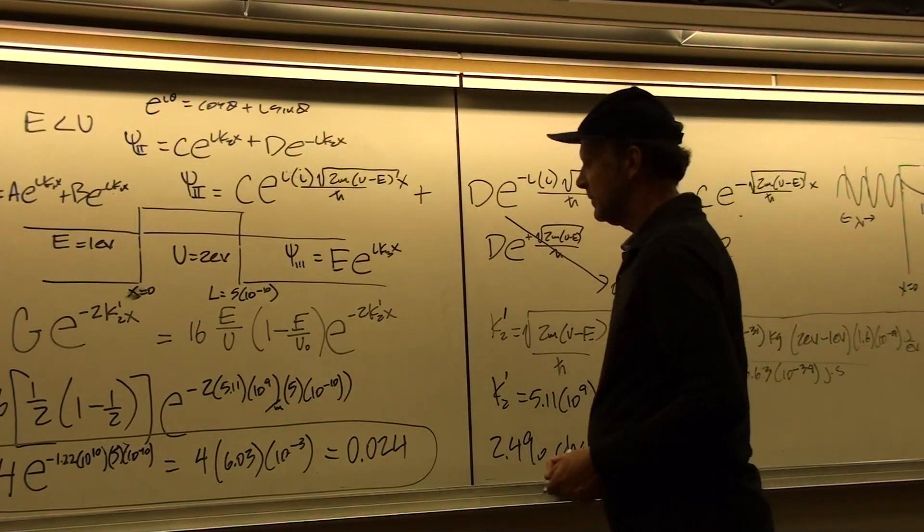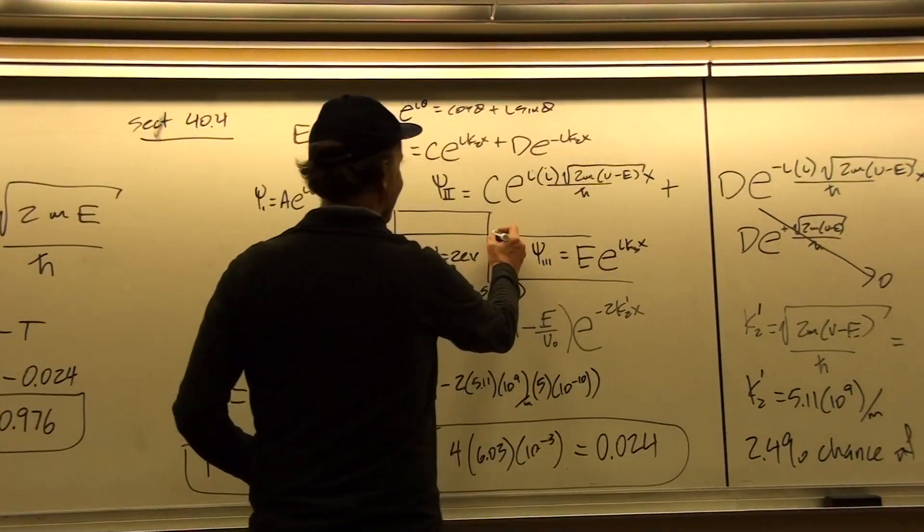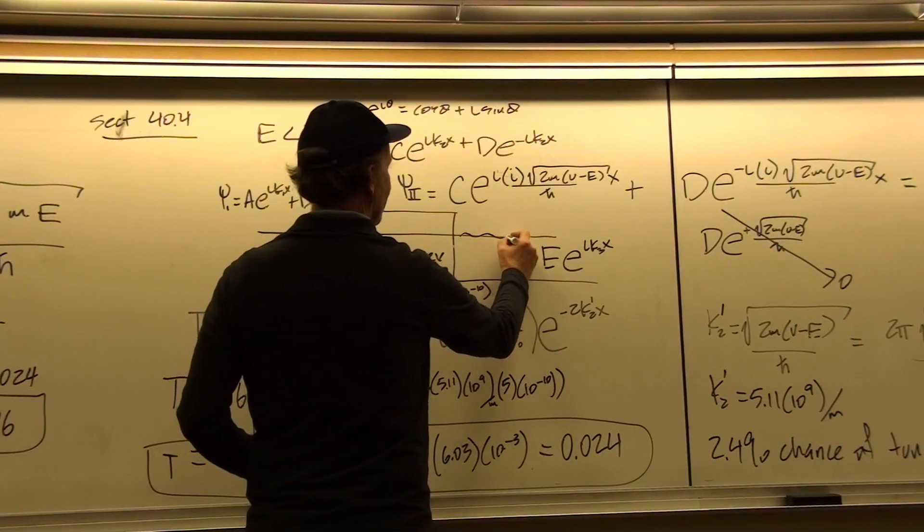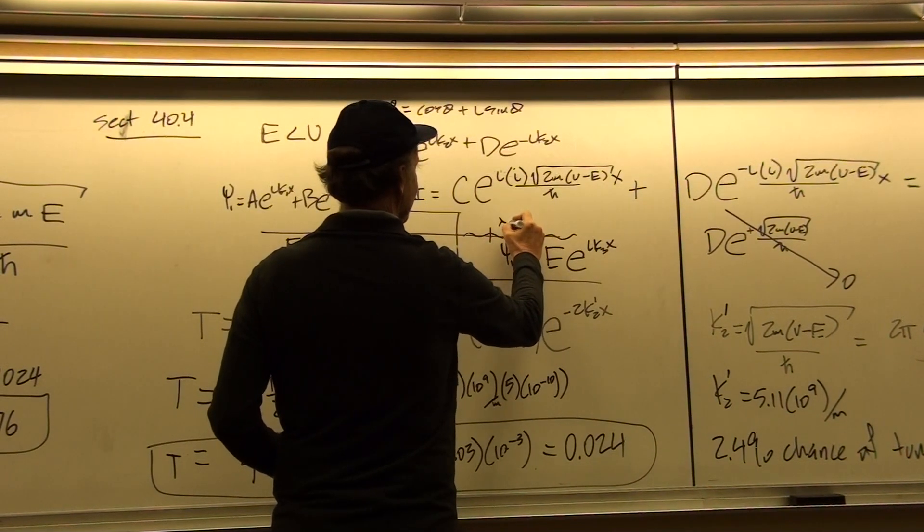But when it does make it through and you measure it, it's going to have a low amplitude on this side, it's going to have the same wavelength that it did on the other side.